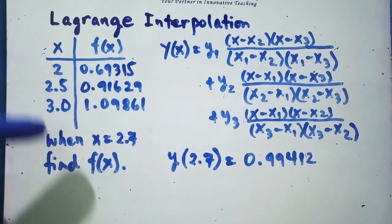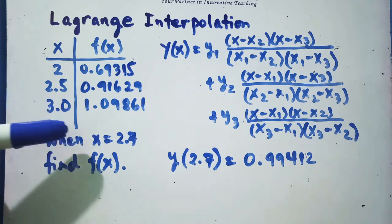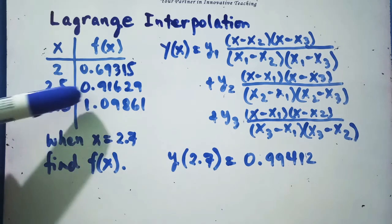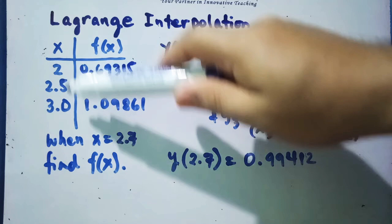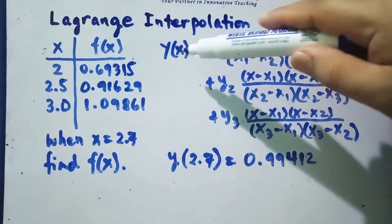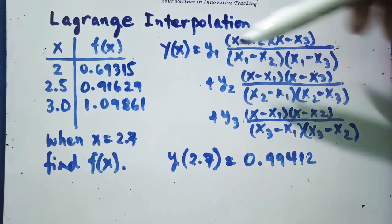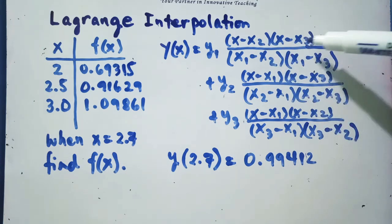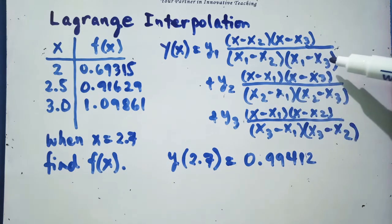In linear interpolation, we can solve this using linear interpolation by selecting 2.5 and 3.0, which is the range wherein our x of 2.7 can be found. Now, using Lagrange interpolation, since we have 3 given points, we write y of x. We will use x as 2.7. That is equivalent to y sub 1 times x minus x sub 2 times x minus x sub 3, over x sub 1 minus x sub 2 times x sub 1 minus x sub 3.